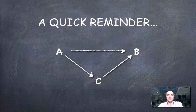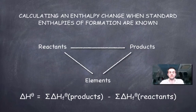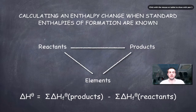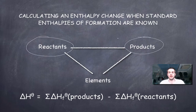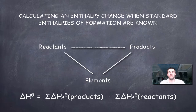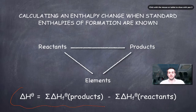As a quick reminder of Hess's law: it doesn't matter how we get from A to B, the enthalpy change will always be the same. Bearing that in mind and considering a general reaction where reactants turn into products, if we know the standard enthalpies of formation of the reactants and the products, we can always find the enthalpy change for the process using this formula.